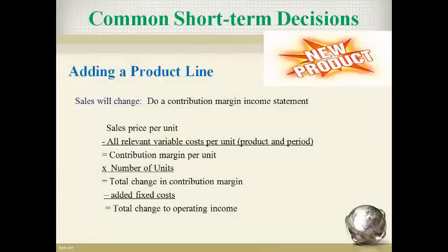Another common short-term decision is whether or not to add a product line or a new product. Adding products changes sales, so always use the contribution margin income statement format. Begin with the sales price and variable cost per unit to get contribution margin per unit. Multiply the per-unit contribution margin by the number of units to get the total contribution margin added by the new product line. Subtract any added new fixed costs to determine the change to operating income. Do not include costs that will not change in total for the company if the product line is added.